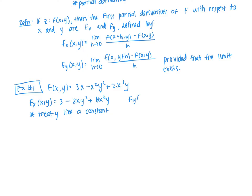If we look at the first partial with respect to y, it's a similar idea except that we treat x like a constant. So that first term of 3x is a constant — derivative of a constant is 0, so that disappears. For the second term, the derivative of y squared is 2y, so that gives negative 2x squared y. Last term: 2x cubed y — that's basically a number times y, so the derivative is just the constant 2x cubed. That is the idea of a partial derivative, or at least how we go about finding them.